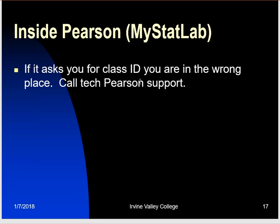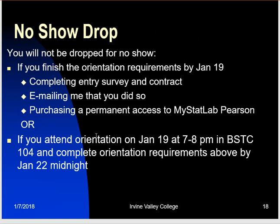If at some point the system asks you for a class ID, you're in the wrong place — you might have clicked some buttons you weren't supposed to. You can call tech support and ask what you did wrong. You have to complete the entry survey and contract within Canvas under Assignments, email me that you did so, and purchase permanent access. My email is iwhite at ivc.edu — you can email me and tell me that you did it. Attend the in-person orientation if you didn't finish all of this. Make sure you complete the orientation by January 22nd at the latest — if you don't, you will be dropped for no show.